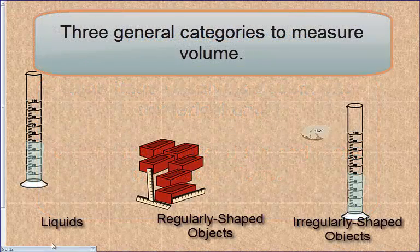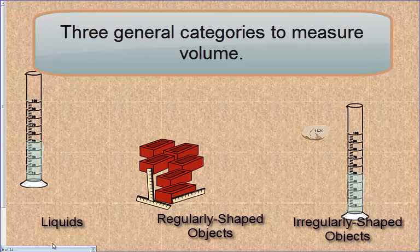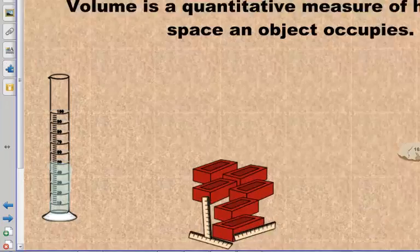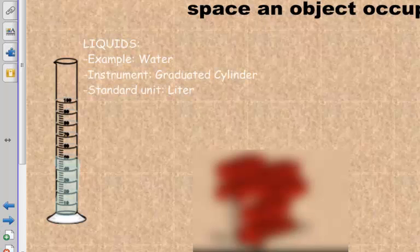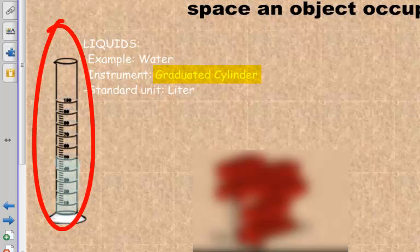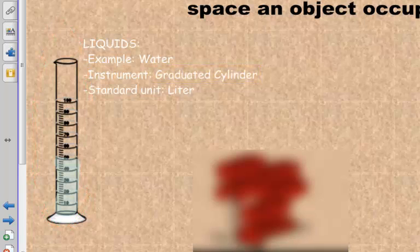Objects are going to be placed in three general categories when you're talking about measuring volume. The first is going to be liquids, and your example would be water. And the instrument that we generally use when measuring the volume of liquids is a graduated cylinder. And the standard unit of measurement for the volume of a liquid is a liter. Now in our lab, we're generally going to be using milliliters because we're dealing with smaller volumes of liquids.